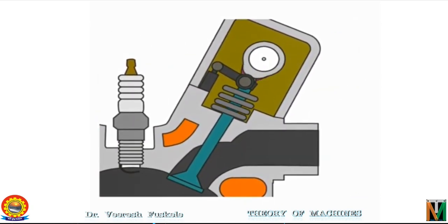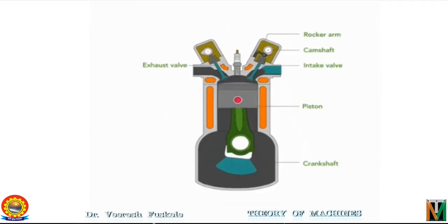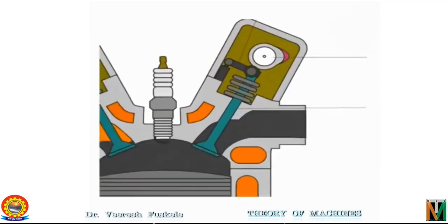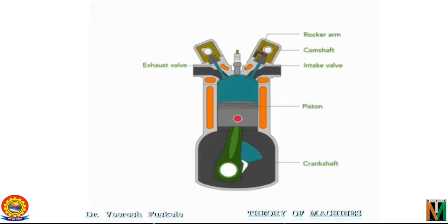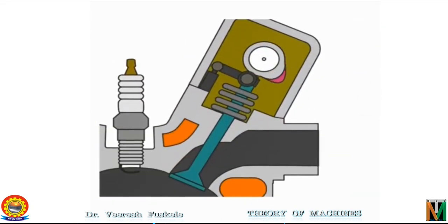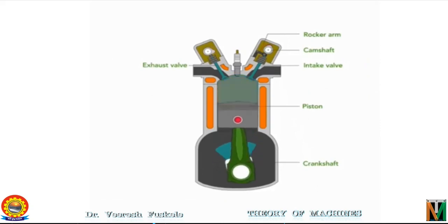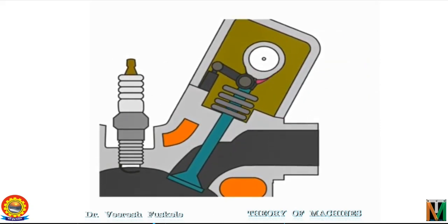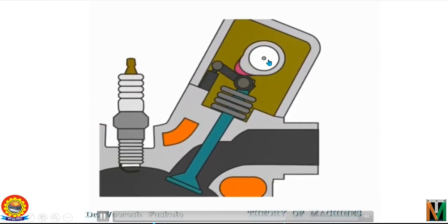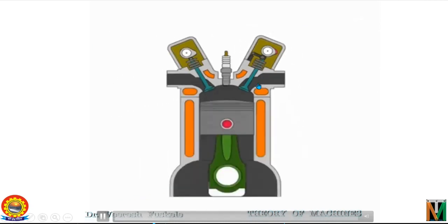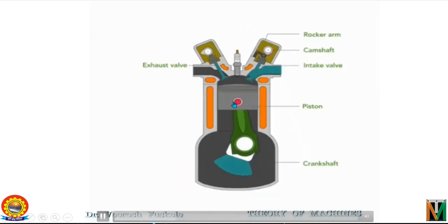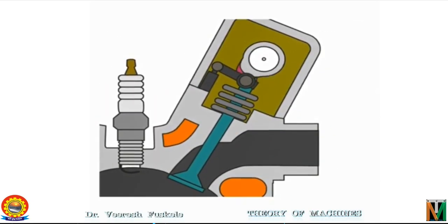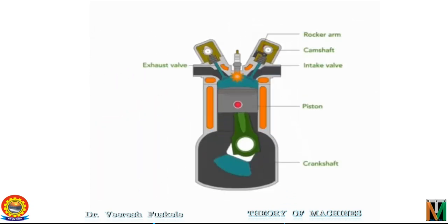Cam and follower mechanisms are widely used in various machines, particularly for timing purposes, as in the case of moving valves of an IC engine. In an IC engine, the valves have to first move to open, then be kept open for some time, then move to close, and then kept closed for some time before opening again. This is very well shown in this video. This is the cam shaft over which the cam is mounted. This is the intake valve. This cam is actuating the opening and closing of the valve. All these timing operations can be easily incorporated by using cam and follower mechanism.